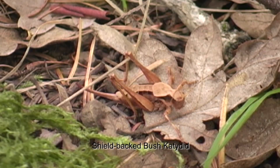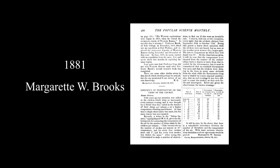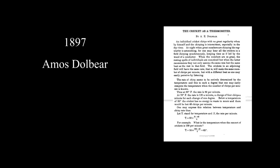The same principle is also true for other singing insects. The concept was first addressed scientifically in an 1881 edition of Popular Science Monthly, where Margaret W. Brooks measured the relationship between cricket chirp rates and the ambient temperature and found a close correlation. In 1897, Amos Dolbear published a formula expressing this relationship, known thereafter as Dolbear's Law.